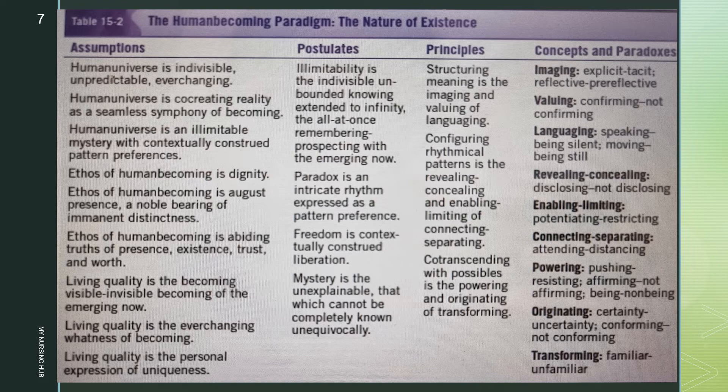The next concept is originating, which is about human uniqueness and holds two paradoxes: certainty-uncertainty and confirming-not confirming. People strive to be like others, yet also strive to be unique. Choices about originating occur with the reality of certainty-uncertainty. It is not possible to know all that may come from choosing to be different or choosing to be like others. For some there is danger in being too much like others; for others the danger is in being different. Originating and creating anew co-exists with constancy and conformity; humans craft their unique patterning as they engage the possibilities of everyday life. Nurses witness originating with persons choosing how they are going to be with changing health patterns.